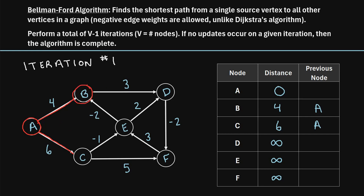Moving on to node B — there's only one edge leading from node B. If we go from node B to node D, that's a distance of three. Currently B has a distance of four, so four plus three is seven. Is seven smaller than the current distance for node D? Yes, seven is smaller than infinity, so we update D to seven with previous node B.